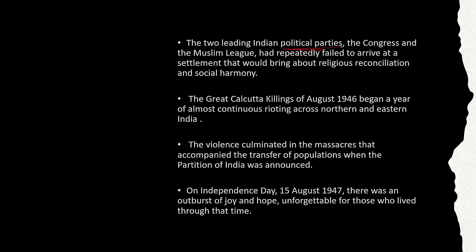Two main leading political parties at that time were Congress and the Muslim League, but their ideas were not in agreement on what religion and society required. Settlements were failing. The Great Calcutta Killings of August 1946 spread violence and massacres across the northern and eastern parts of India. Eventually the partition was announced, and we got independence on 15th August 1947, but along with it came partition.